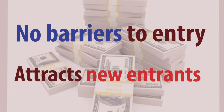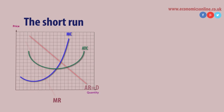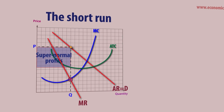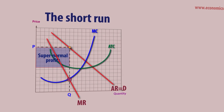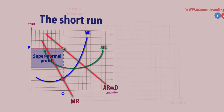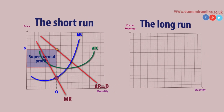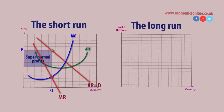The absence of barriers to entry allows firms to enter the market, attracted by the super normal profits available in the short run. Here we see that super normal profits are available in the short run.